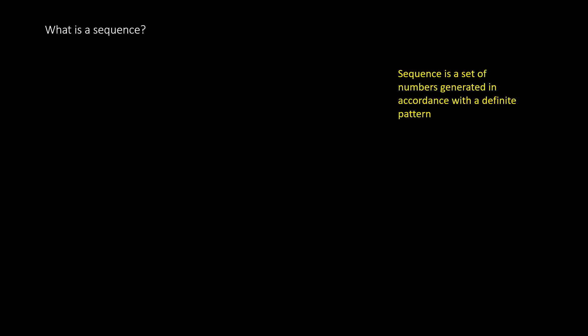Let's start this class by looking at what a sequence is. We say that any set of numbers generated in accordance with a definite pattern is called a sequence. For example, look at the following set of numbers: 1, 2, 3, 4, 5, 6, 7, and so on. You can see this is a sequence.